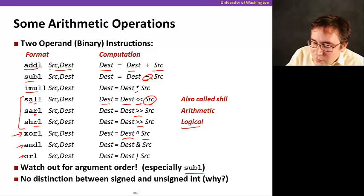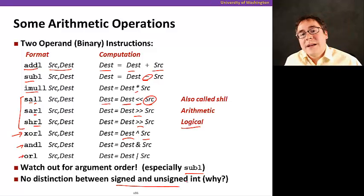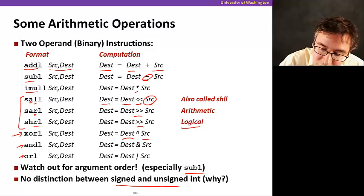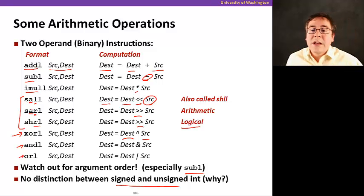So, and note that there's no distinction here between signed and unsigned int. Why is that? Well, it's because remember that if you use two's complement, you can do arithmetic without regard for the sign bits. Everything just falls out of that. But note that you do have to worry about whether you're doing shift arithmetic or shift logical because of the sign bit.